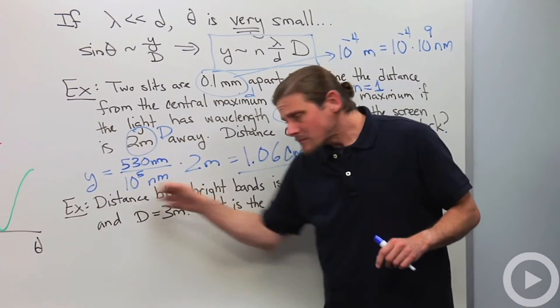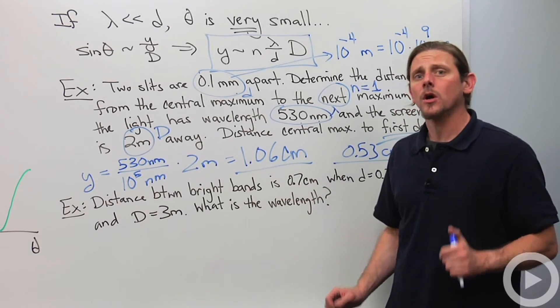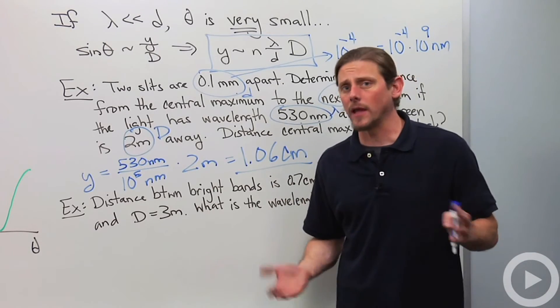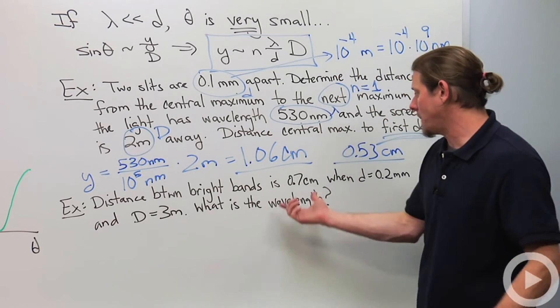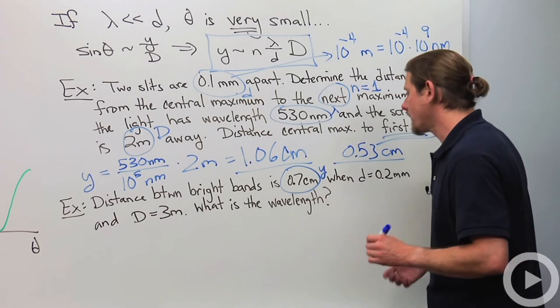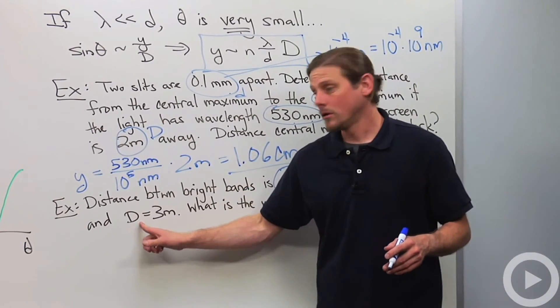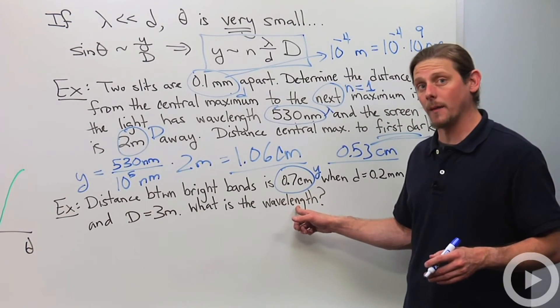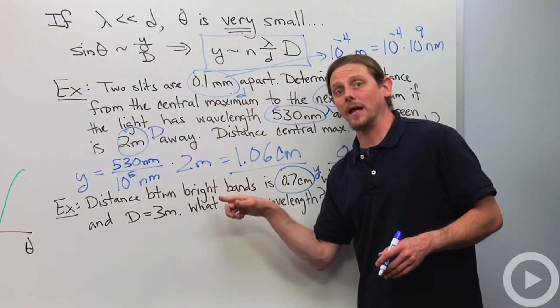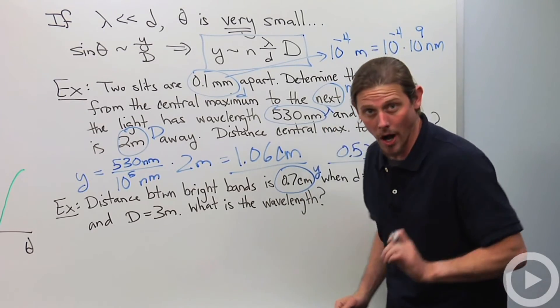Let's do the next one. This is actually what the double slit experiment is used for now to measure wavelengths. So now we're given the distance between bright bands. We're using some sort of laser and we can see the distance between the bright bands and we measure it as 0.7 centimeters. So this is y. So d, it gives us d. It gives us capital D too. And now we want to know the wavelength lambda. We're going to use again n equals 1 because we're looking at bright bands that are right next to each other. So that means that we went from one of them to the next. n equals 1.